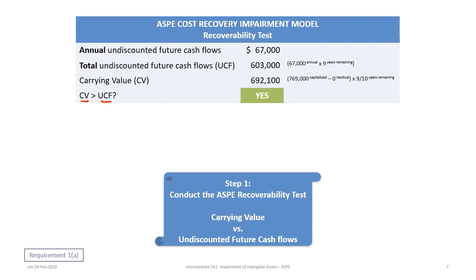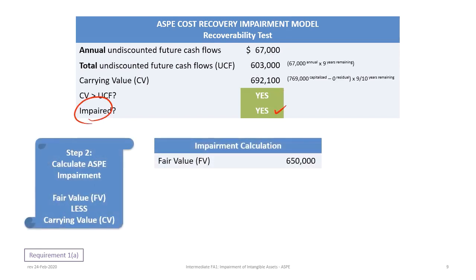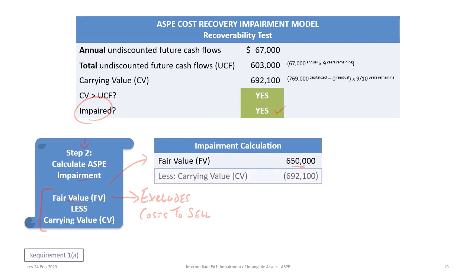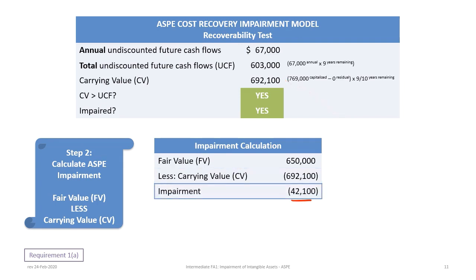Comparing the carrying value to the undiscounted future cash flows: since the carrying value of $692,100 is greater than the undiscounted future cash flows of $603,000, the asset is impaired. We then proceed to step two and calculate the impairment under ASPE as the carrying value less fair value. The fair value under ASPE excludes any costs to sell — unlike IFRS, which includes disposal costs. With a fair value of $650,000 and a carrying value of $692,100, the impairment loss is $42,100.